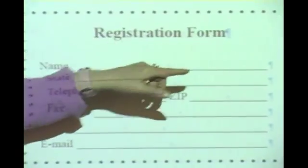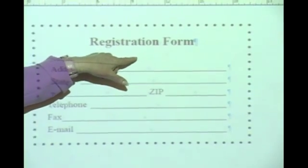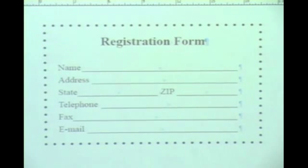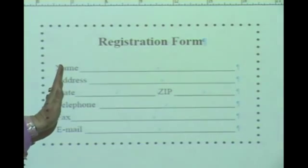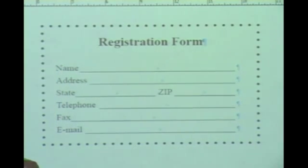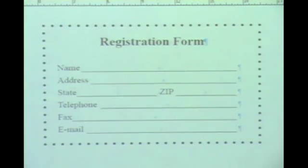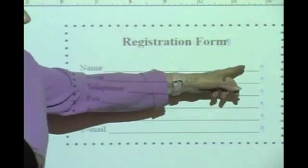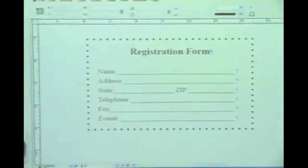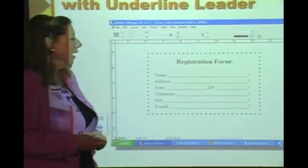In the registration form there is only one hard return between items — I've used space after to push things down. I typed the word 'Name' and did not hold Shift and tap the underscore repeatedly, because none of them would align. Instead there is only one tab with an underlined leader, ending at a specific point, then a hard return for the next line.